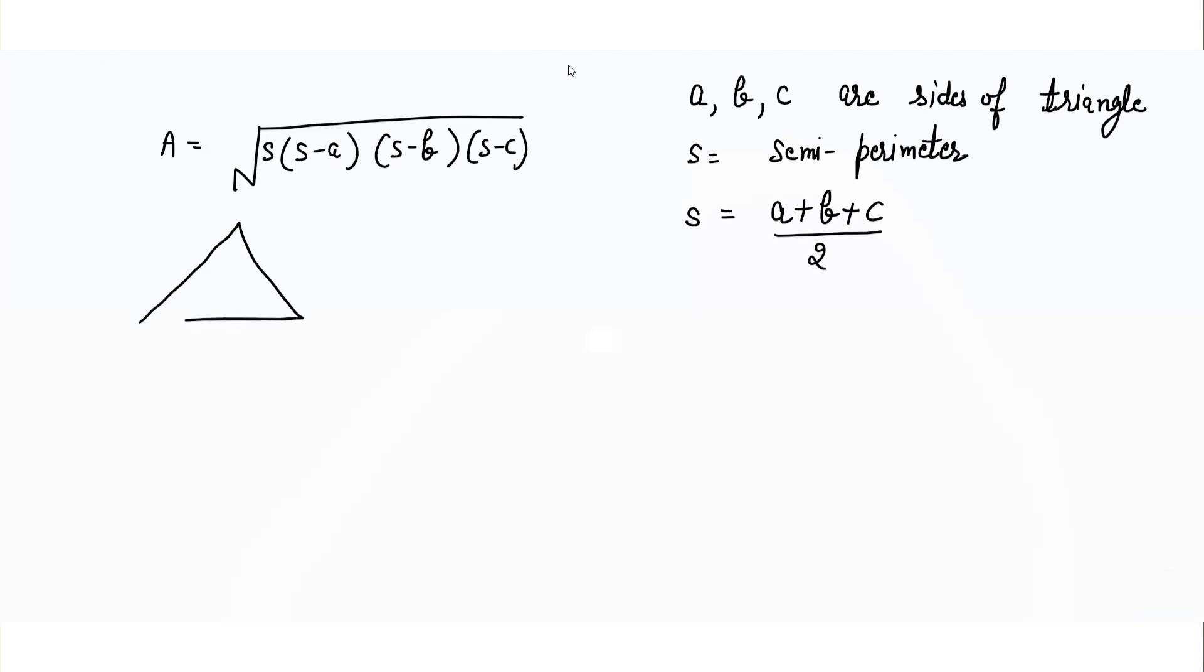Suppose we have a triangle ABC where the side lengths are 32 meters, 24 meters, and 40 meters. I will take a equals 24 meters, b equals 40 meters, and c equals 32 meters.